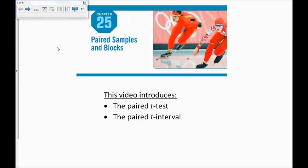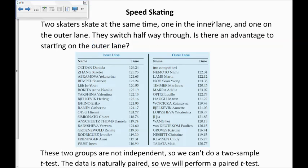This video is about chapter 25 on paired samples and blocks. In this video, we'll talk about the paired t-test and the paired t-interval. Here is a situation about speed skating. In speed skating, you have two skaters that start at the same time, one on the inner lane and one on the outer lane. And halfway through the race, they switch which lane.